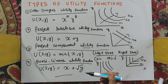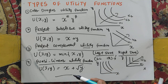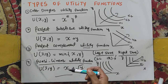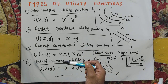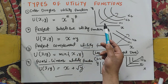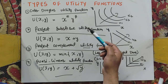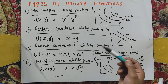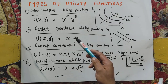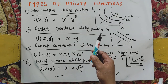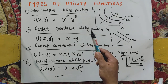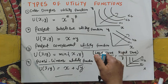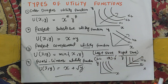That was a brief summary of the types of utility functions. In the next videos, I will explain each utility function in detail — including the marginal rate of substitution, the marginal rate of technical substitution, and how to find the optimal bundle for each. I hope I made myself clear in this video. Thank you.